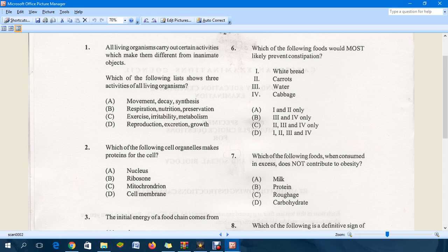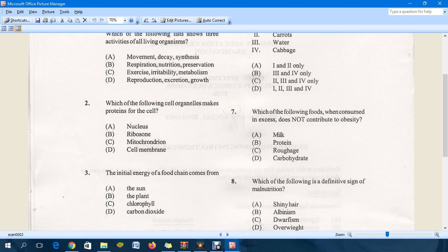Question two: Which of the following cell organelles makes proteins for the cell? The answer is B, ribosome. Nucleus controls the activities that take place inside a cell. Mitochondrion is known as the powerhouse of the cell, meaning that is where energy is released. Cell membrane allows substances to enter and leave the cell.